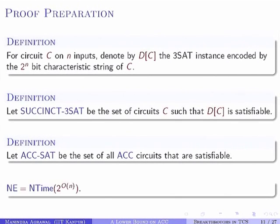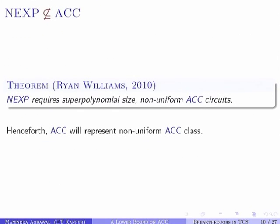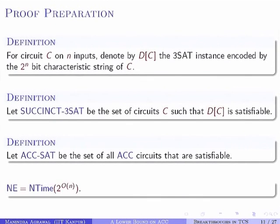Here is the outline of the proof. It consists of a sequence of four lemmas. Before giving the lemmas I will give some definitions. From now onwards, whenever I say ACC, it is implicitly assumed I am talking about non-uniform ACC circuits, since that is what the result is about.